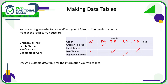Now you can just work out the totals. The total number of chicken jalfrezi is one, lambuna zero, beef madras three, vegetable biryani one. That adds up to five — one, two, three, four, five — perfect for the five people.